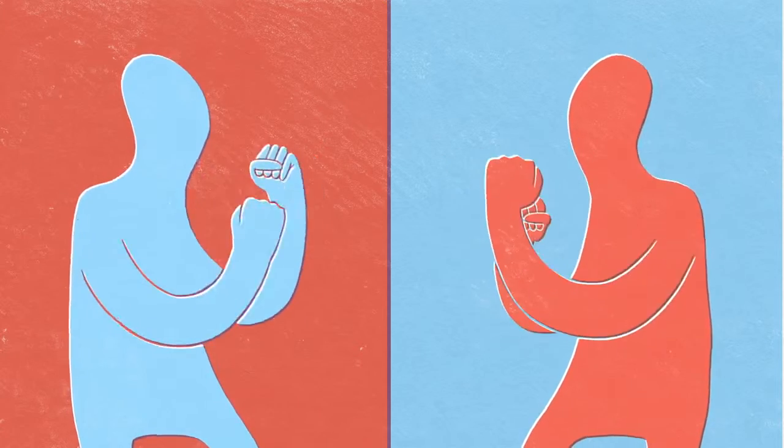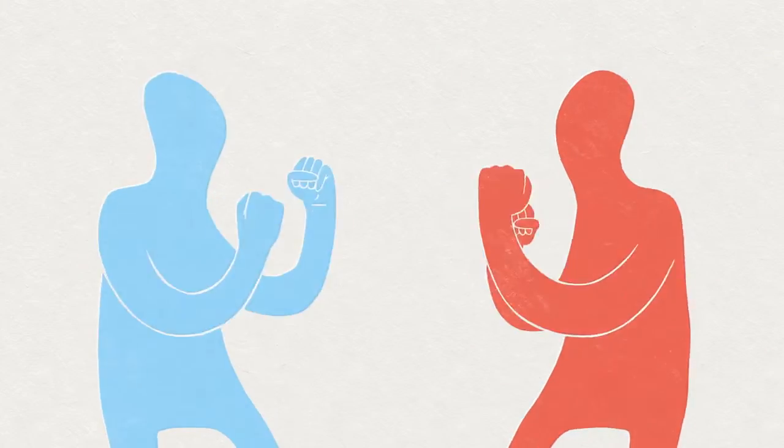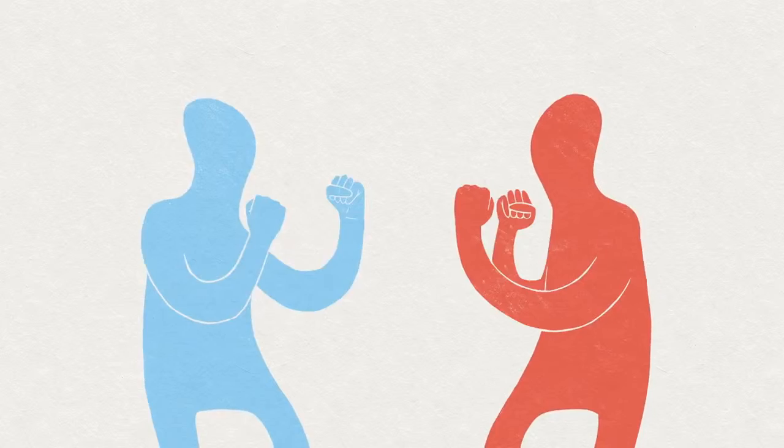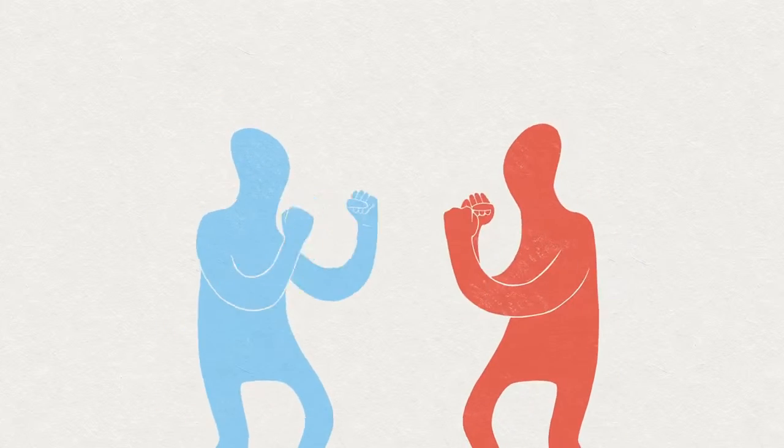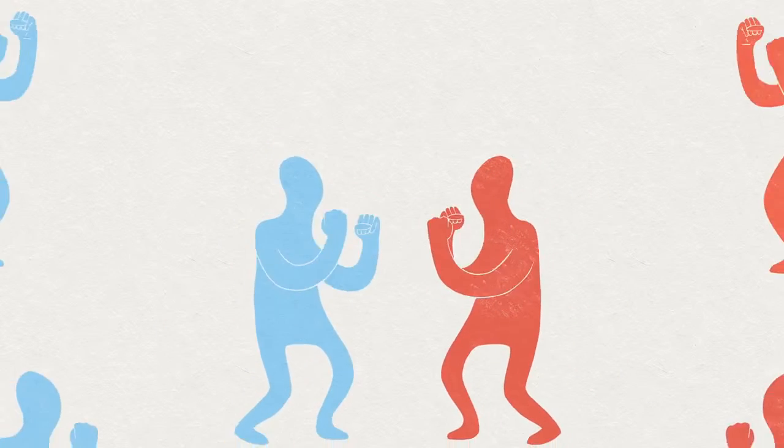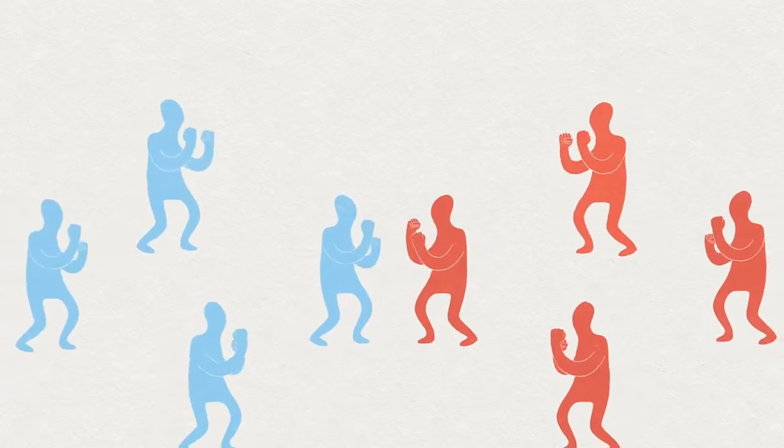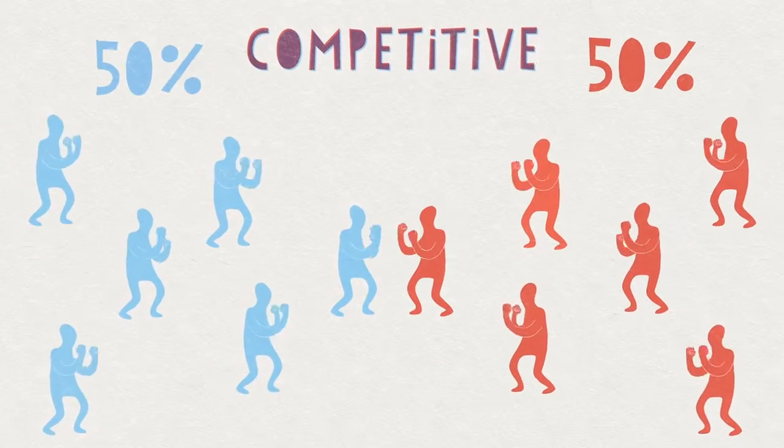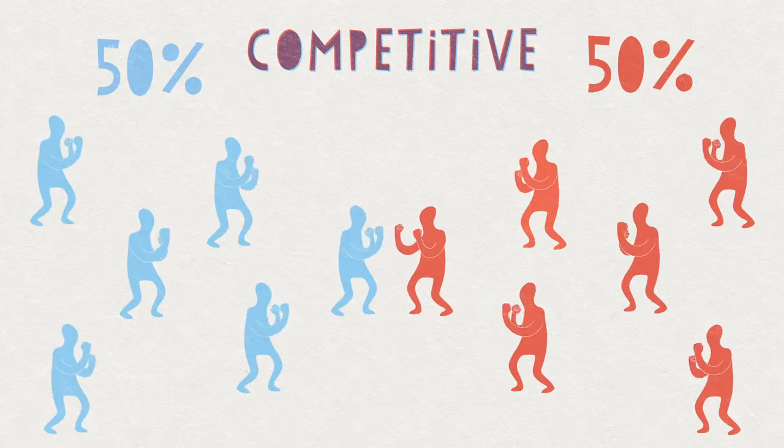If people were only fighting and competing throughout human evolution, natural selection would lead to more lefties being the ones that made it, until there were so many of them that it was no longer a rare asset. So in a purely competitive world, 50% of the population would be left-handed.